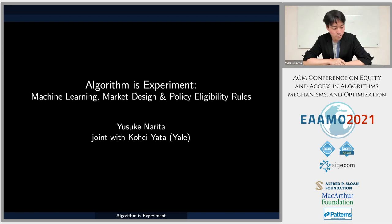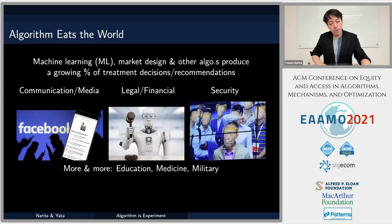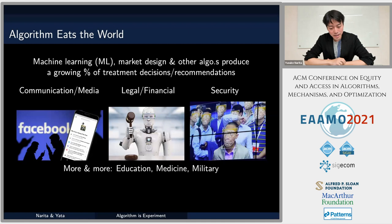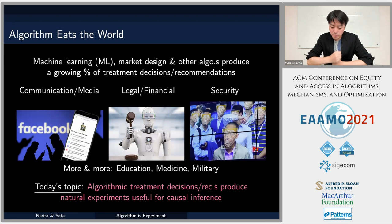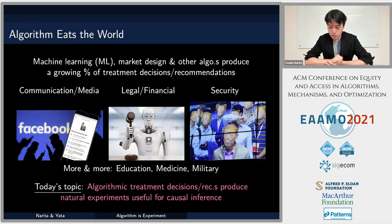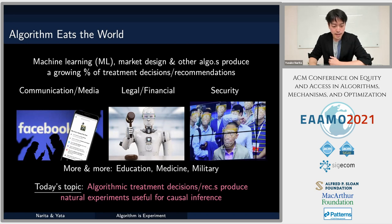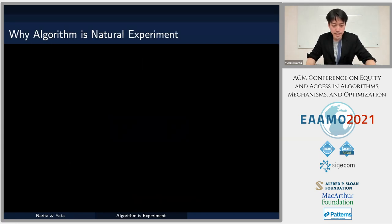Kohei Yata is a job market candidate in econometrics at Yale's economics department. The motivation for this project is very simple: we are now in the golden age of decision-making algorithms. Algorithms in machine learning, market design, and many other domains are now creating a growing fraction of treatment decisions and recommendations. The goal is to take a specific econometric or causal inference look at the surge of algorithmic resource allocation and decision making.